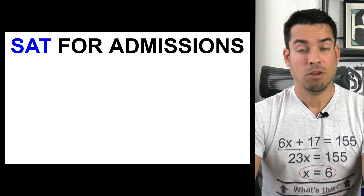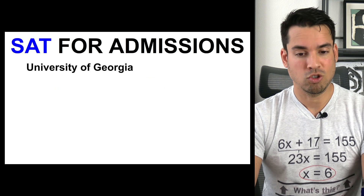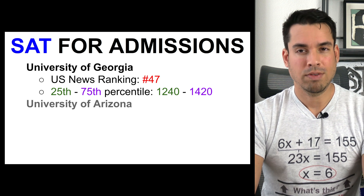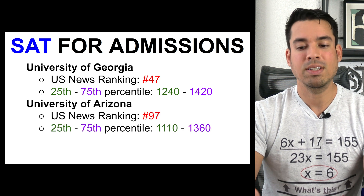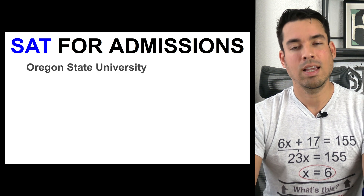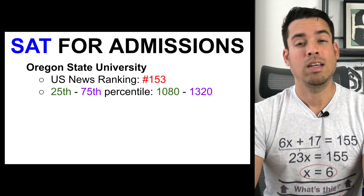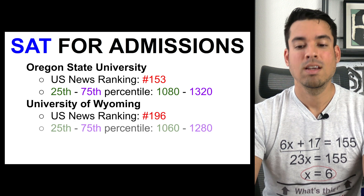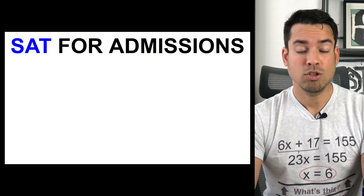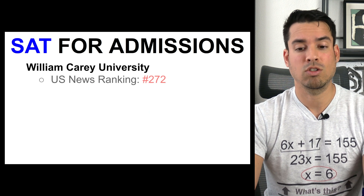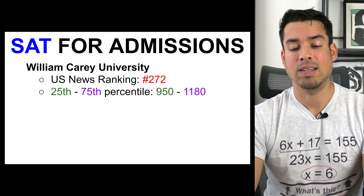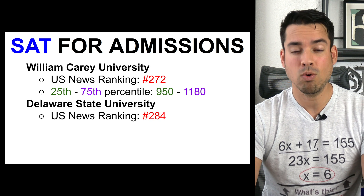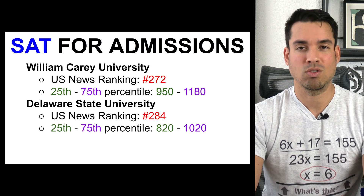Jumping further down the rankings, the University of Georgia at 47th takes a range of 1240 to 1420. The University of Arizona, ranked 97th, has a range of 1110 to 1360. Oregon State University at 153rd has a range of 1080 to 1320. The University of Wyoming at 196th has 1060 to 1280. William Carey University at 272nd has 950 to 1180, and Delaware State University at 284th has 820 to 1020.